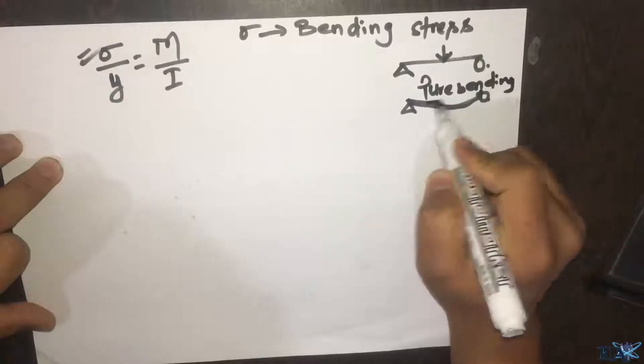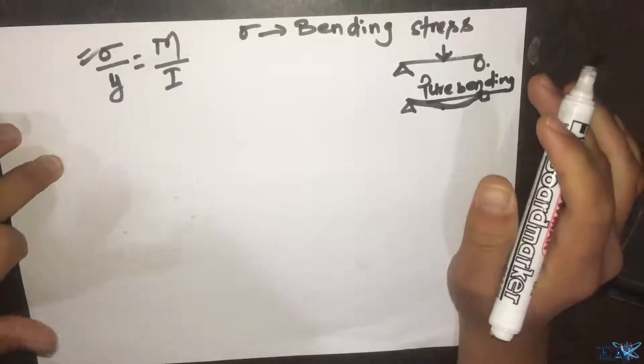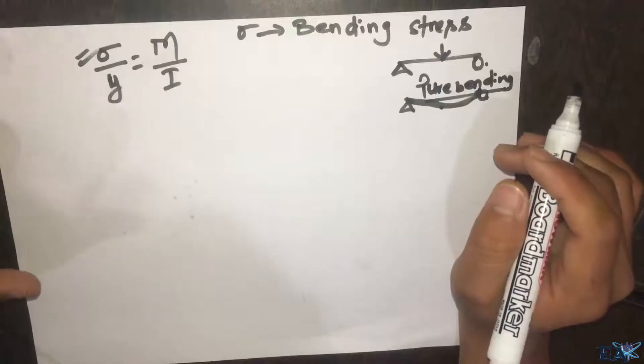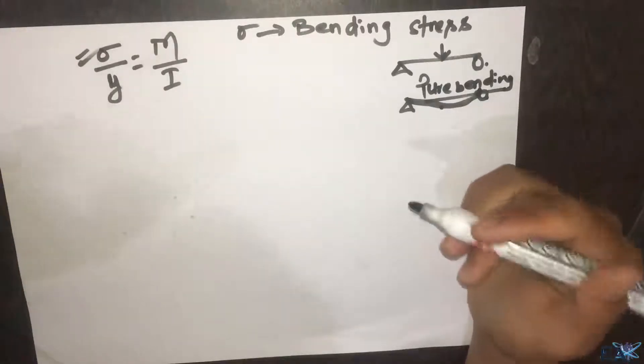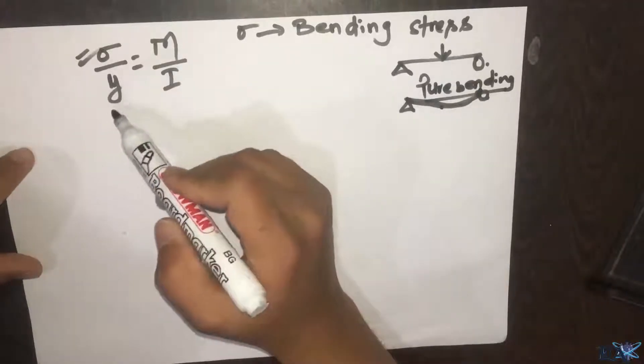Pure bending means it must only bend - there shouldn't be any shear force or axial force for compressive and tensile loads. There must be only the bending moment. Here, Y represents the position of any plane with respect to the neutral axis.